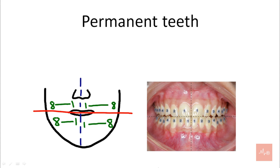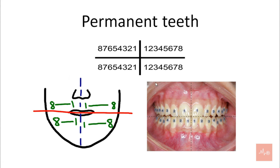Moving on to the permanent teeth in the Palmer-Zsygmondy system. The permanent teeth are represented with numerals, that is one to eight. Every quadrant starts with one and ends with eight. So one is central incisor, two is lateral incisor, three is canine, four is first premolar, five is second premolar, six is first molar, seven is second molar and eight is third molar.